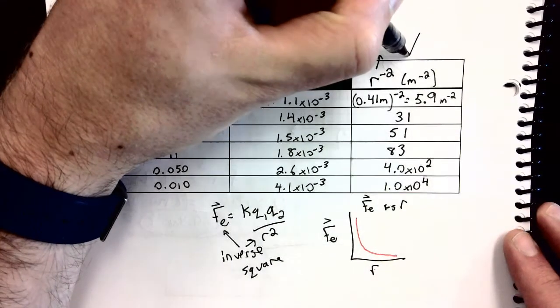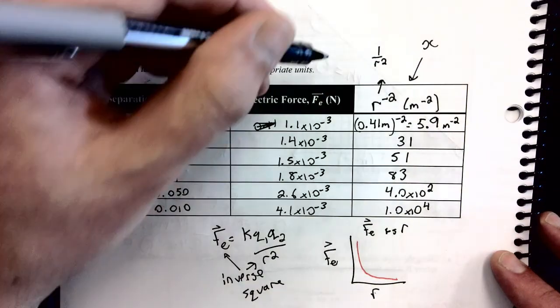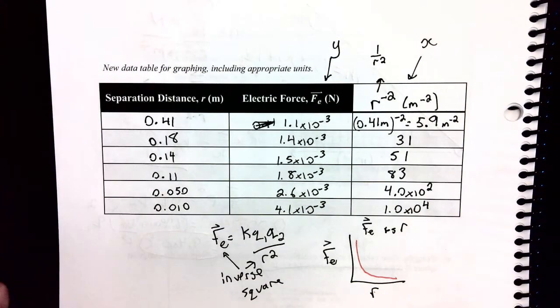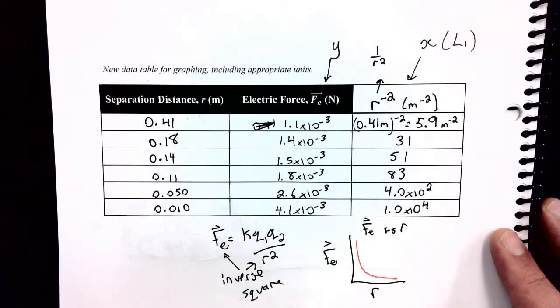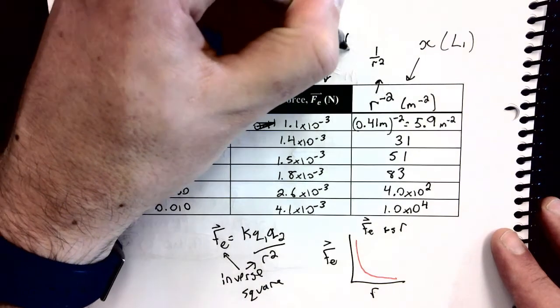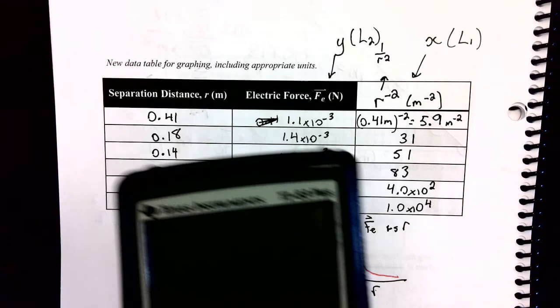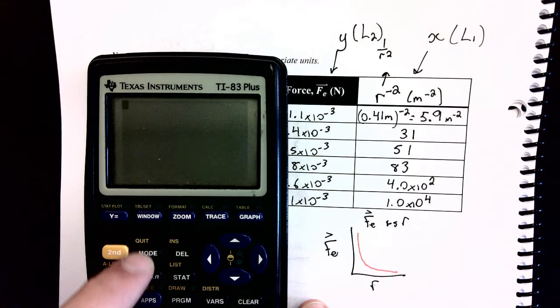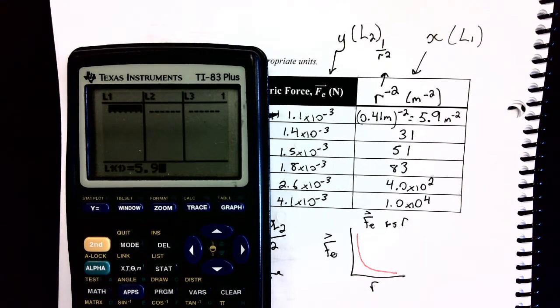Now I'm going to take these values, and I'm going to graph them on a new graph on the next page. I am going to make my r to the power of negative 2 values the x of the graph, and I'm going to take my electric force values and make them the y. I'm going to graph on the graphing calculator. When we do this, x is going to be list 1, L1 on your calculator, and y is going to be L2. And this is my reminder to you that the steps we're going through in doing this are in your lab manual.